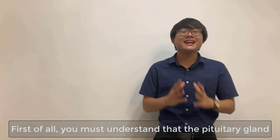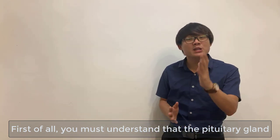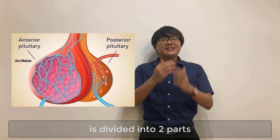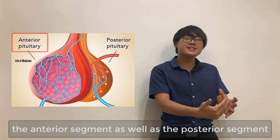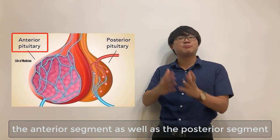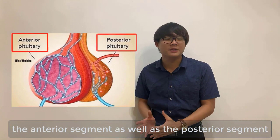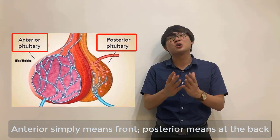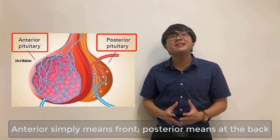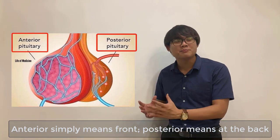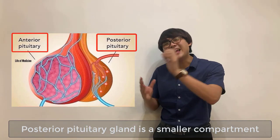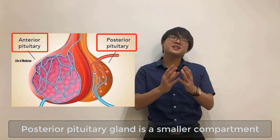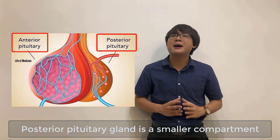First of all, you must understand that the pituitary gland is divided into two parts: the anterior segment as well as the posterior segment. Anterior simply means front and posterior simply means at the back. The posterior pituitary gland is a smaller compartment.